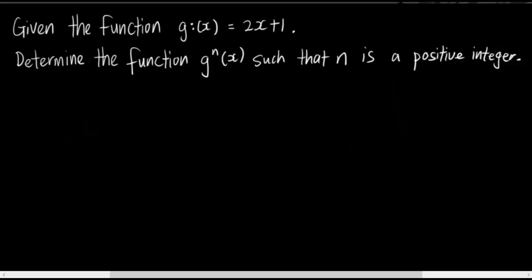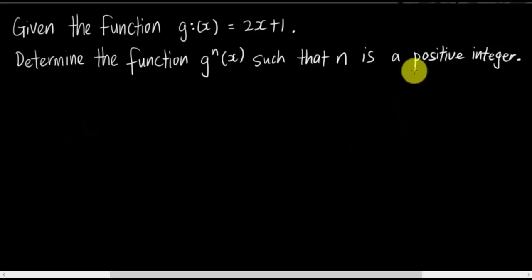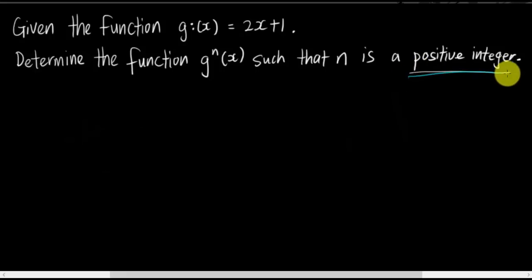So let's have a look at this question. The question basically says that given the function g(x) equals 2x plus 1, determine the function g^n(x) such that n is a positive integer. The first thing I want you to understand is what a positive integer means — it's a positive number.